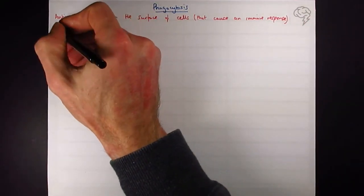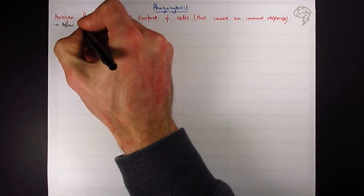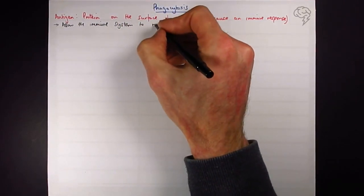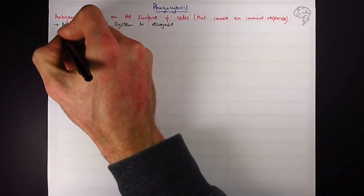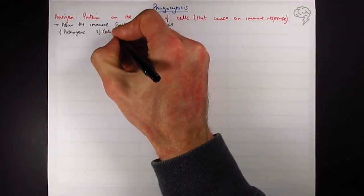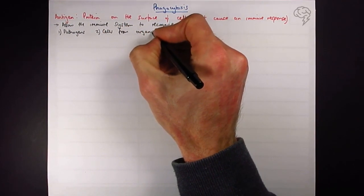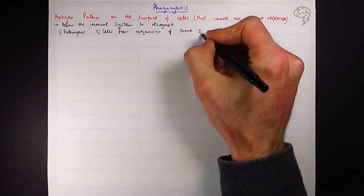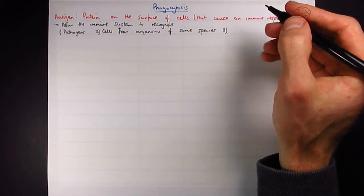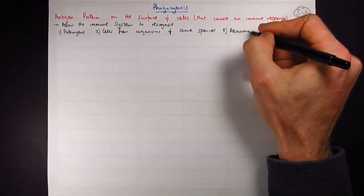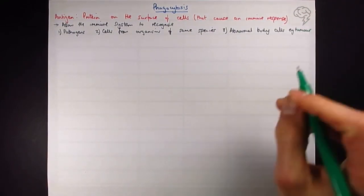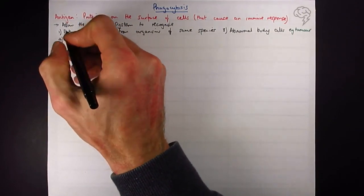They allow the immune system to recognize a whole load of different things. One: pathogens, which is what we're most concerned about here. Two: cells from organisms of the same species. Three: abnormal body cells, so abnormal cells from an organism of the same species, for example tumor cells have different antigens that we can recognize. And number four: toxins.